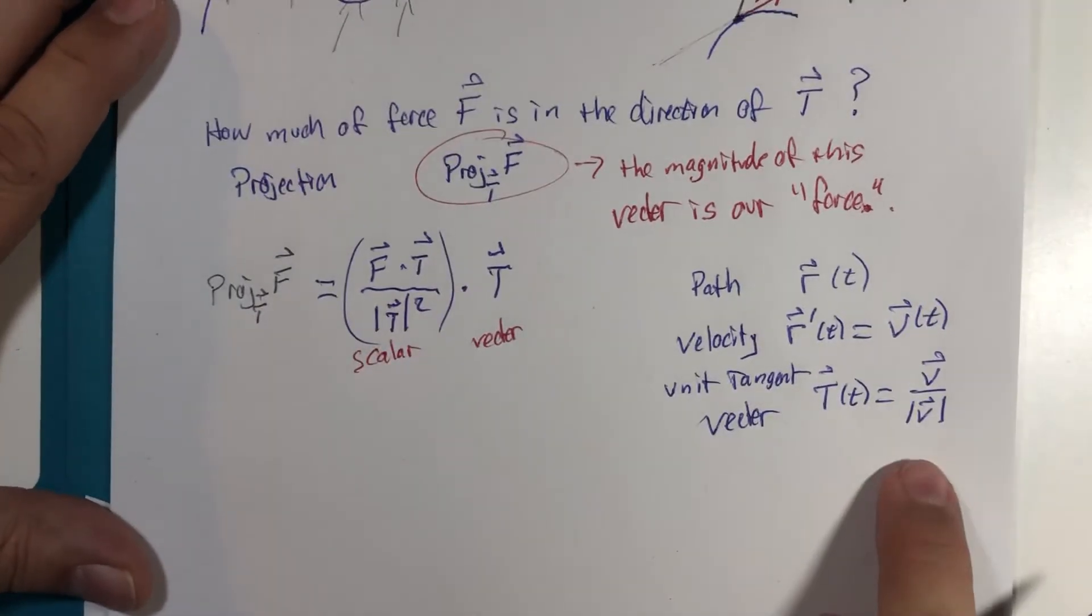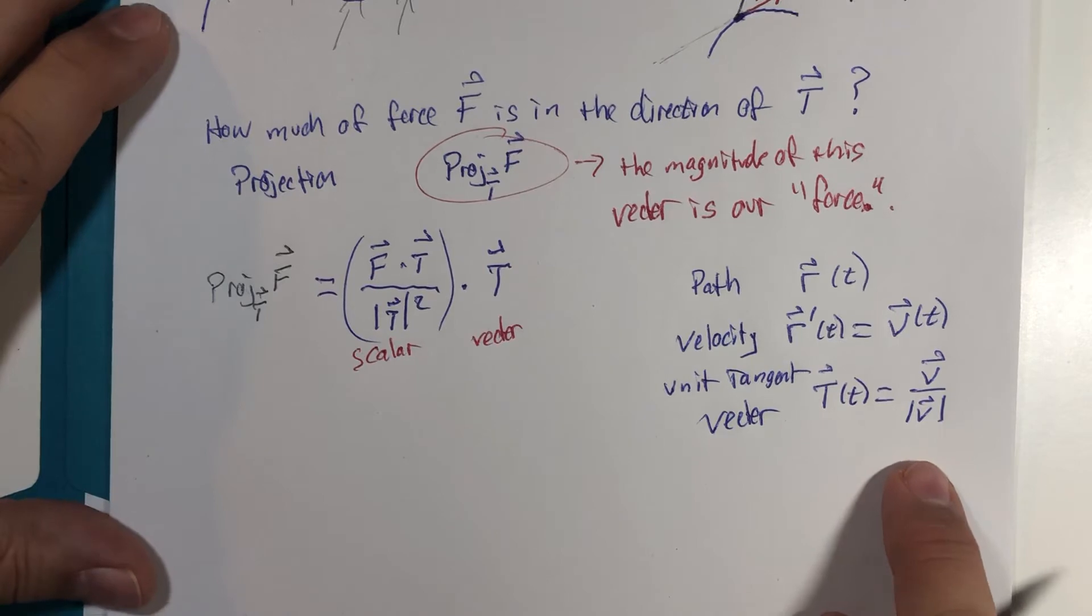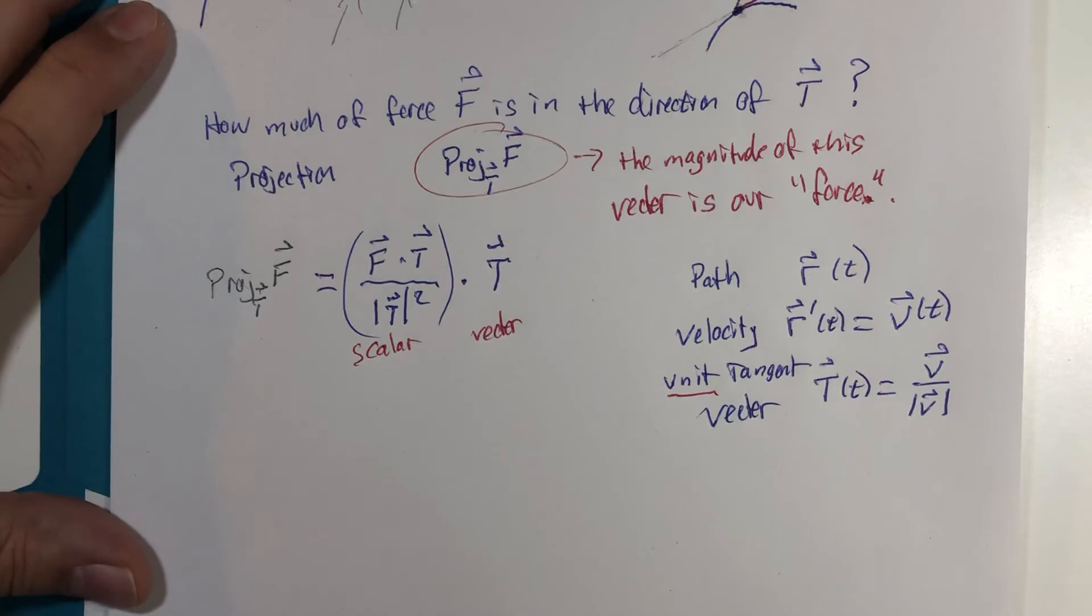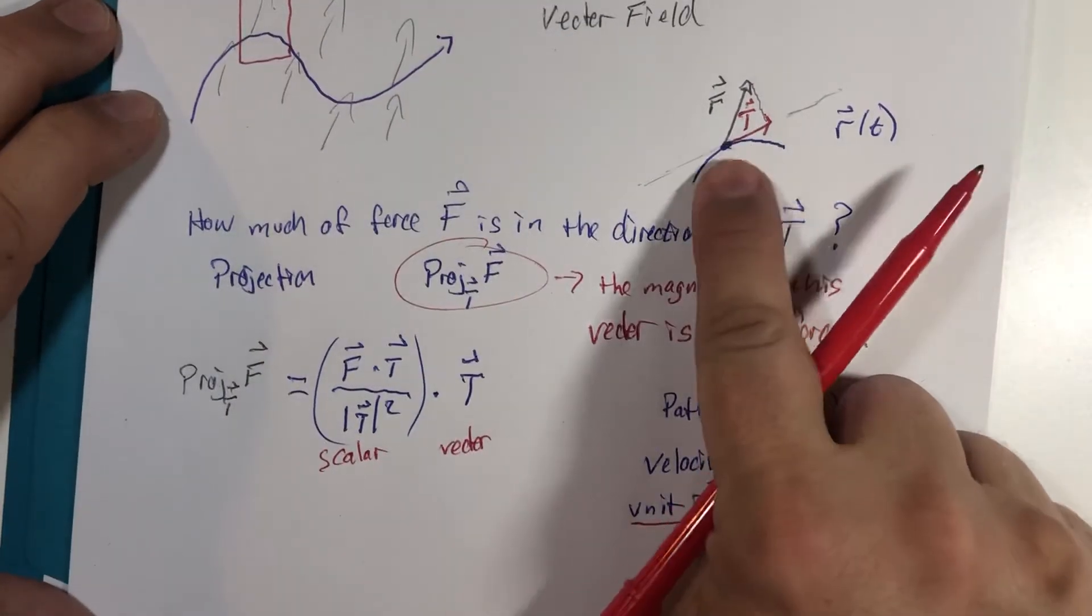You have the path, or the curve, R of T. You have the velocity vector, R prime of T, otherwise known as velocity vector. And we have the unit tangent vector, capital T, which is velocity over its magnitude. I'm abbreviating the notation here. It's a unit vector. This vector here has length one.